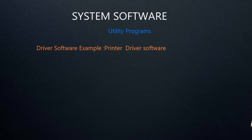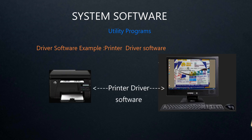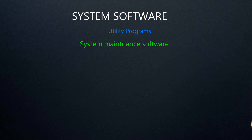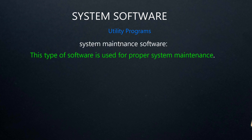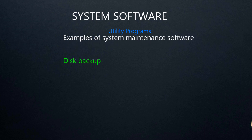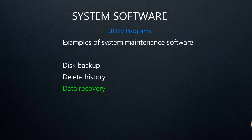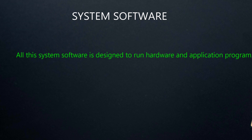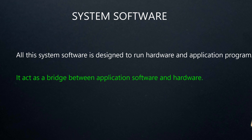Now we can see printer driver software. If a printer is connected to a computer, the computer cannot identify the device until the driver software is installed. Driver software is used to identify the hardware connected to a computer and also controls its operations. The next type of utility program is system maintenance software. This type of software is used for proper system maintenance. Examples are disk backup, delete history, data recovery, etc. All system software is designed to run hardware and application programs — it acts as a bridge between application software and hardware.